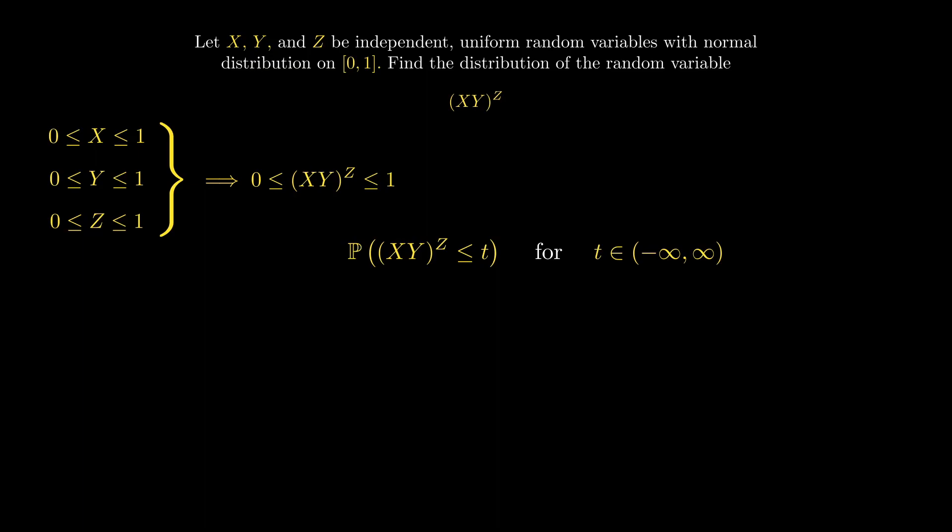Since we just observed that XY^Z is non-zero only on the interval from 0 to 1, this probability is 0 for t less than 0 and 1 for t greater than 1.